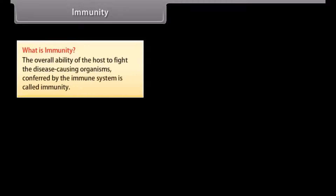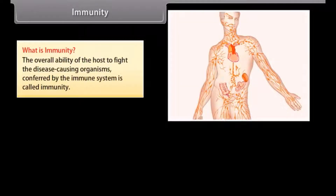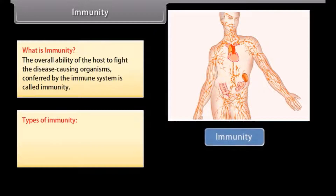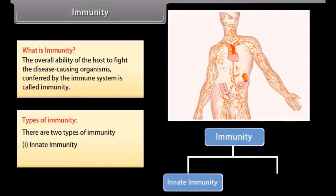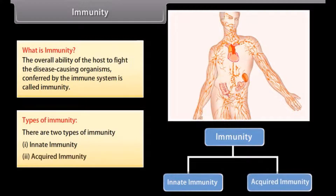What is immunity? The overall ability of the host to fight the disease-causing organisms, conferred by the immune system, is called immunity. There are two types of immunity: innate immunity and acquired immunity.